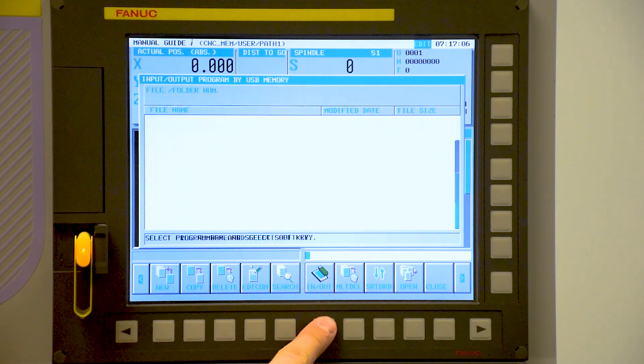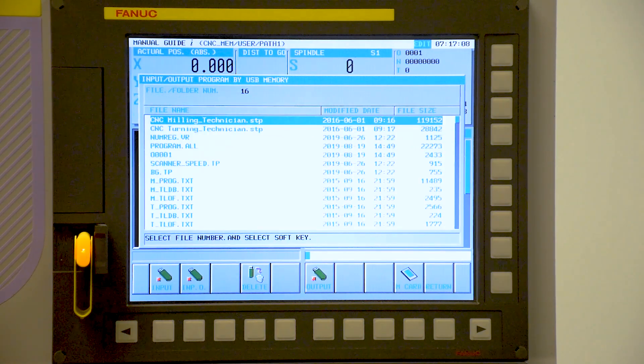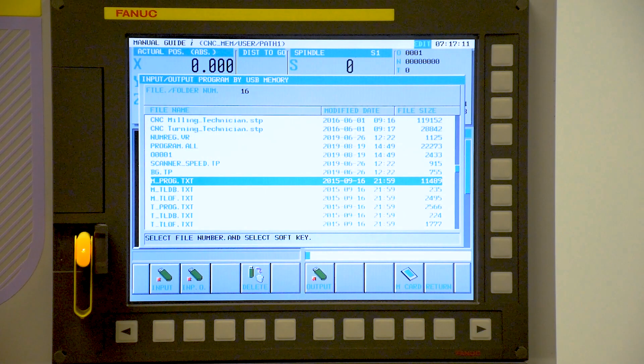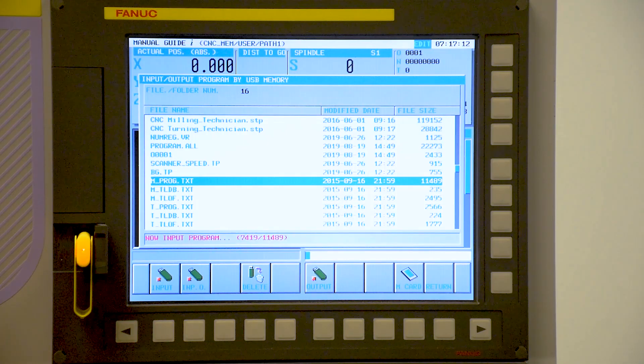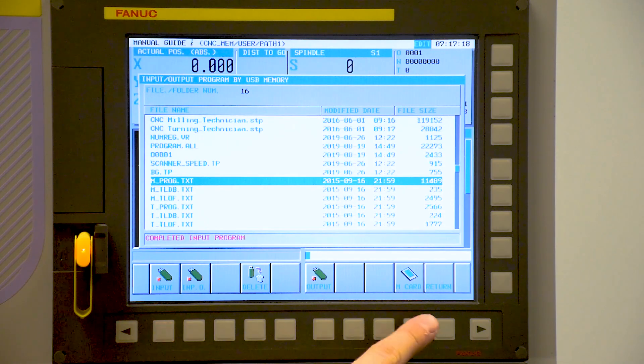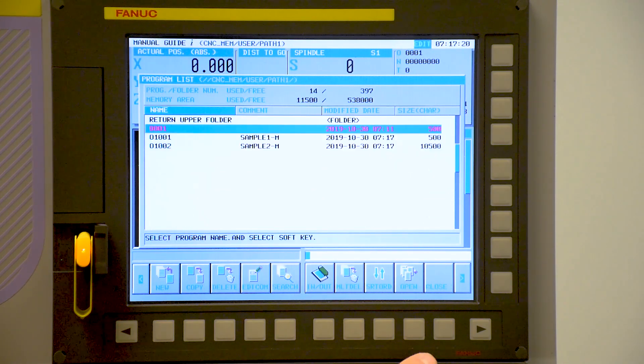If we select the in and out soft key and then select another part program, I know this to work, so I'm going to select the m_prog.txt, press the input soft key and now we see it input the program. We press return and come back out.